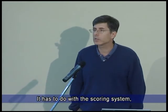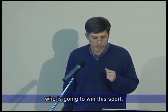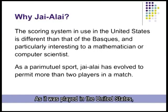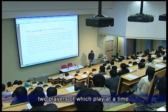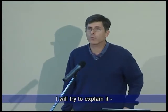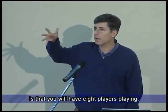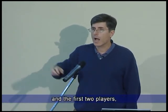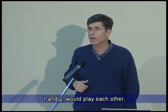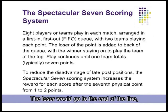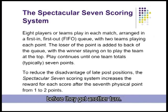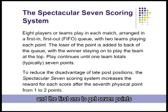The mathematical structure has to do with the scoring system — how they keep points to decide who's going to win. As it was played in the United States, you don't have two players in each match; you really have eight players, two of which play at a time. The players are numbered one to eight. The first two players play each other, the winner of the point keeps playing, and the loser goes to the end of the line and waits until everybody else plays before getting another turn. The goal is to get seven points — the first one to get seven points is the winner.